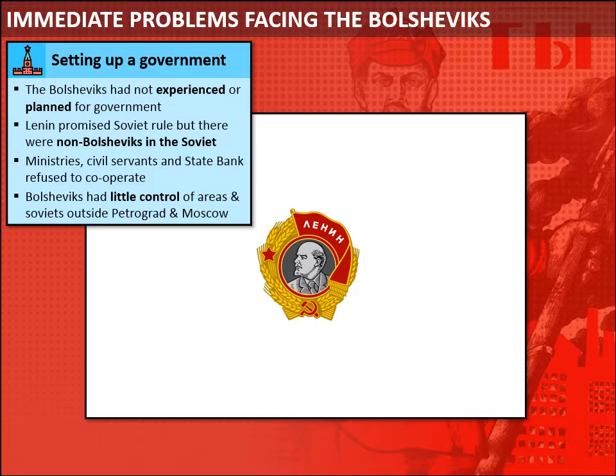Government ministries, civil servants and the State Bank were refusing to work with the Bolsheviks — they had gone on strike. Although the Bolsheviks took power in Moscow after ten days of fighting, outside of Petrograd and Moscow the Bolsheviks had almost no control of the country whatsoever. Local committees and local Soviets were running their own affairs and were not under Bolshevik control.